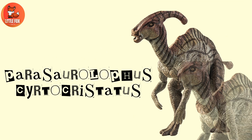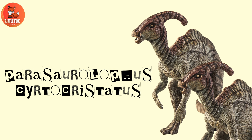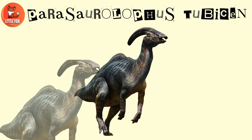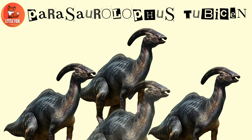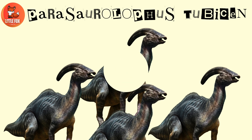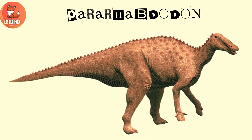Number 31. Parasaurolophus certocristatus. Number 32. Parasaurolophus tobison. Number 33. Parasaurolophus wakere. Number 34. Parasaurolophus.